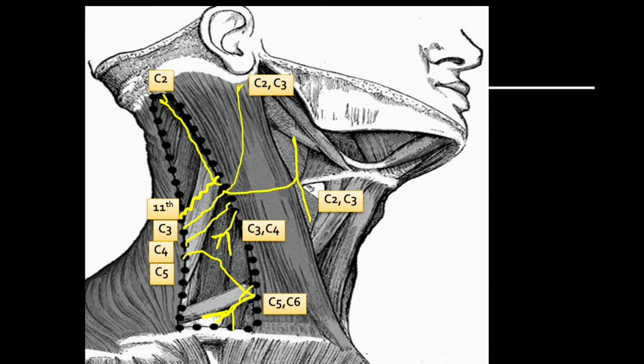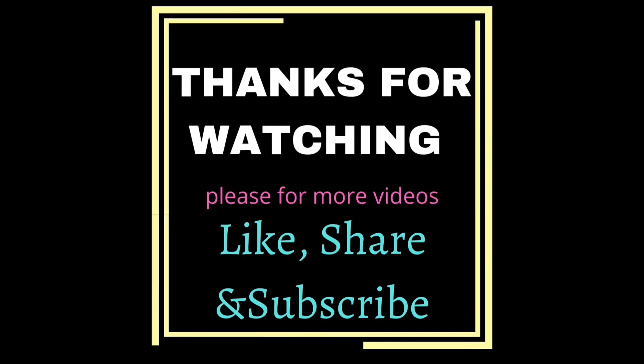Another structure we can see is the transverse cervical artery, a branch from the subclavian artery, and the occipital artery at the apex of the triangle.